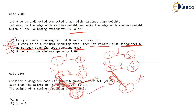So option B is correct and option C is false. No minimum spanning tree ever contains Emax is the false statement — because Emax can indeed be present in the minimum spanning tree, as we have seen. The maximum weight edge can be there in the minimum spanning tree.